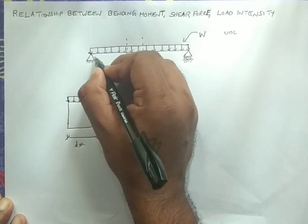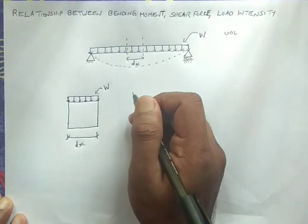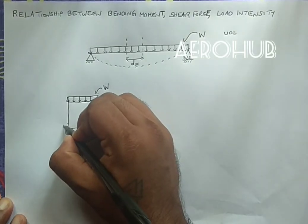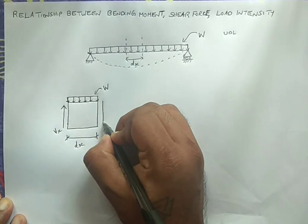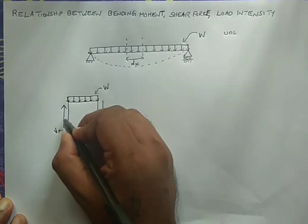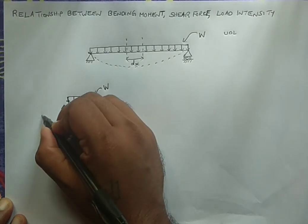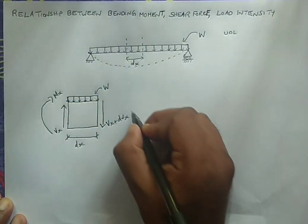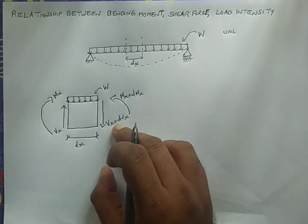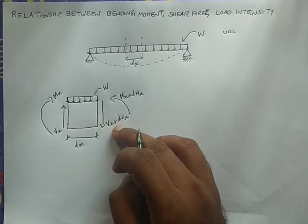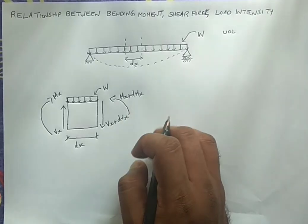When the beam is subjected to this UDL, it will bend. To keep the beam in equilibrium, a shear force VX acts in the reverse direction on one side, and on the other side there is an opposing shear force VX plus dVX. Similarly, a clockwise moment MX is generated on one side, and on the other side an anti-clockwise moment MX plus dMX, expanded using Taylor series.